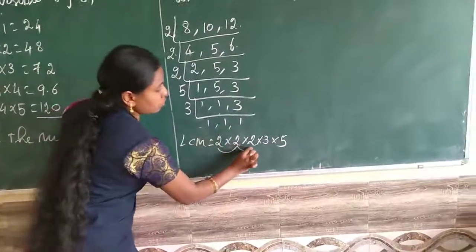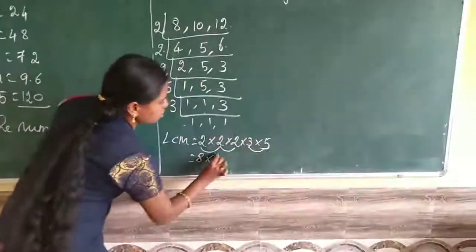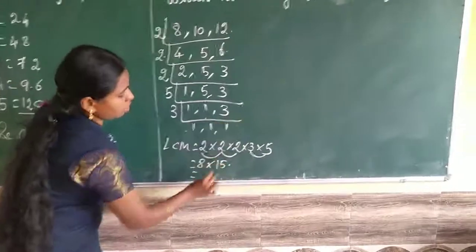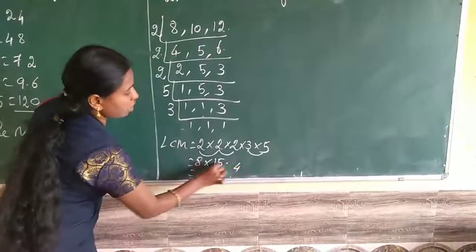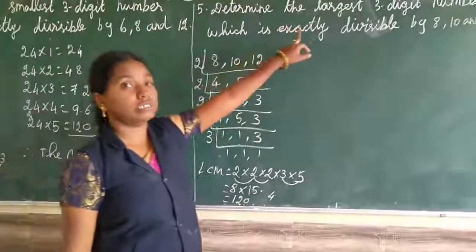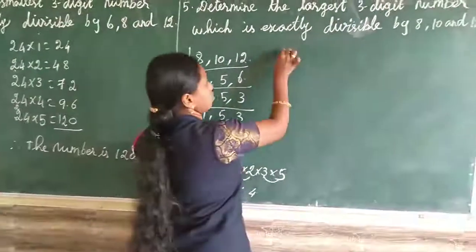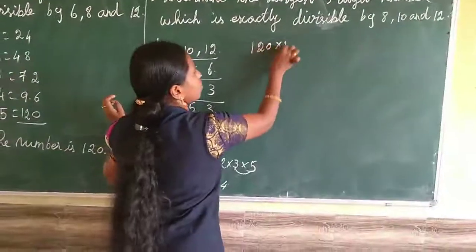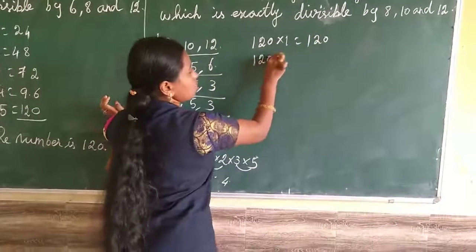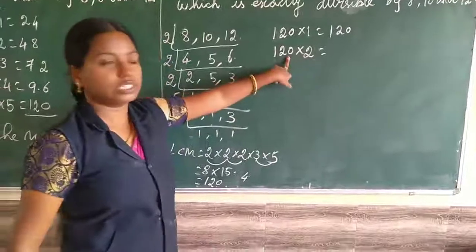2 is 4, 4 is 8. 8 into 3, 5 is 3. So, 15 means, 8, 40 equals 0, carrying in 4, 8, 4. So, 120. They are asking the largest 3-digit. So, 120, we will write the table.